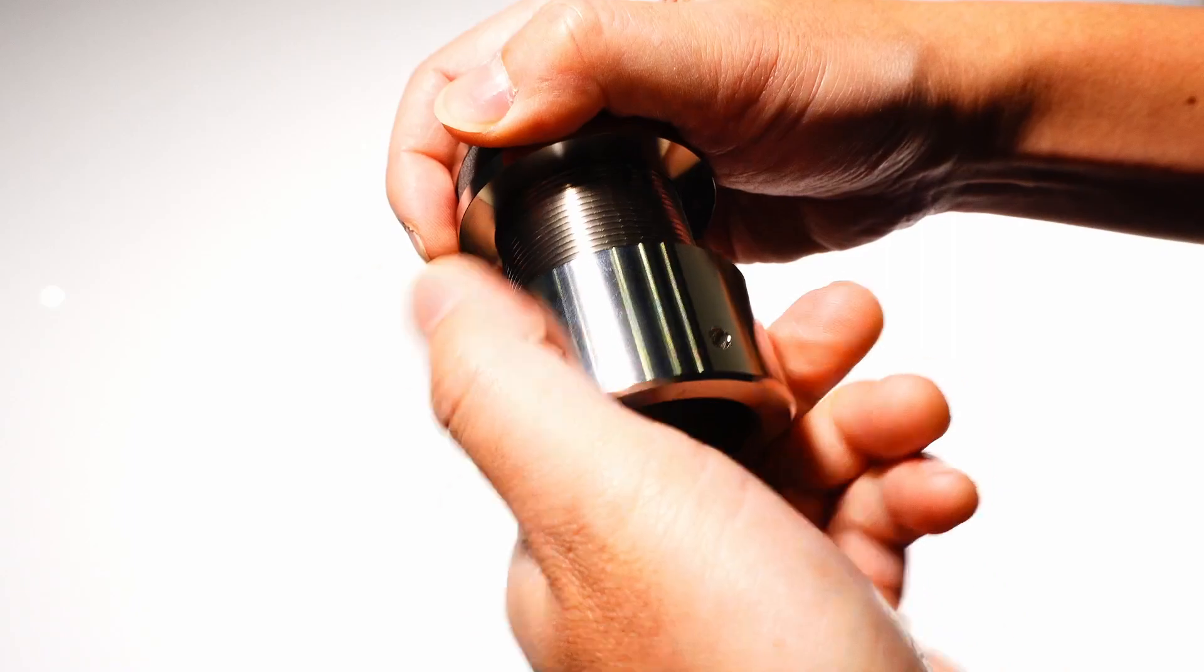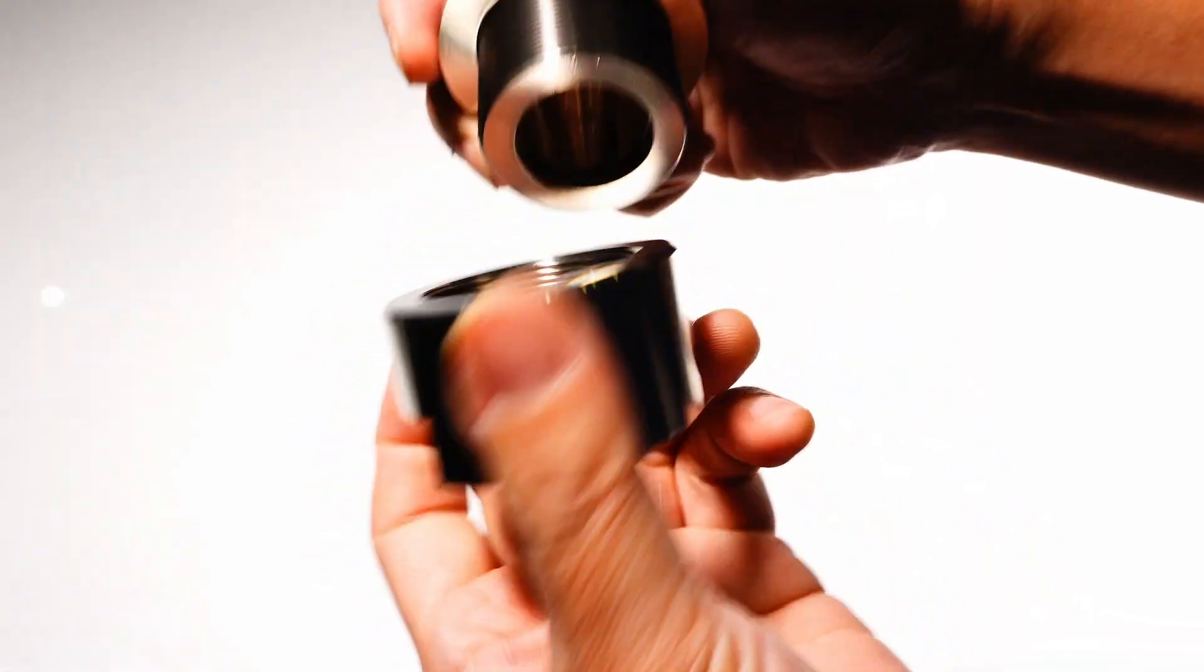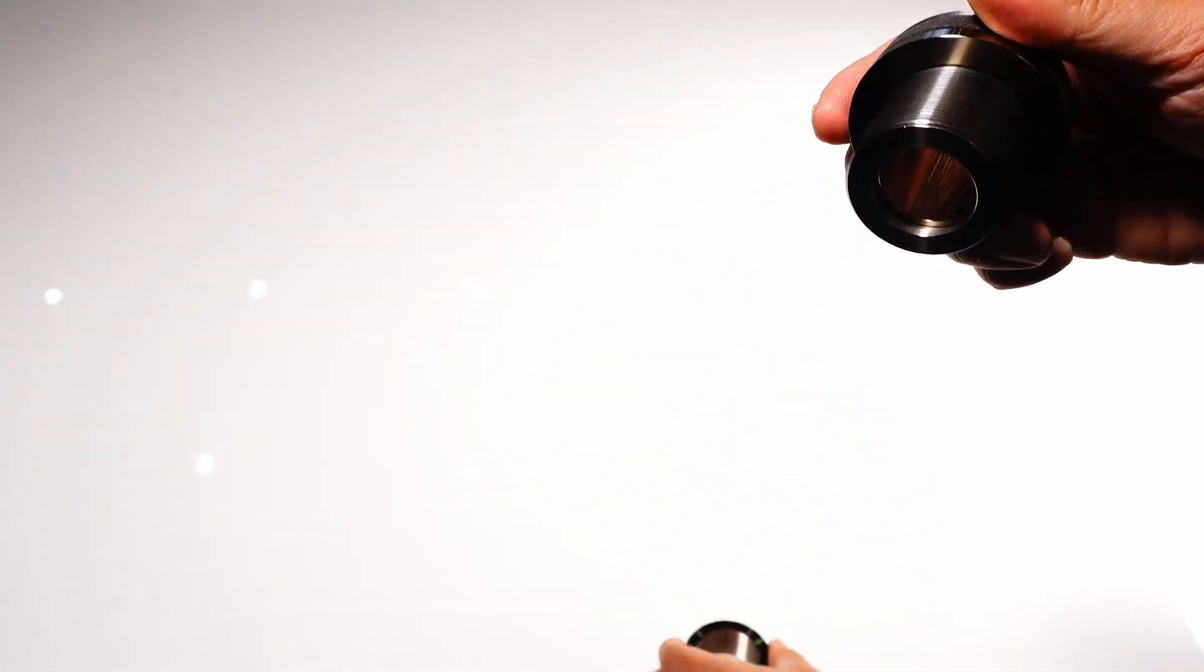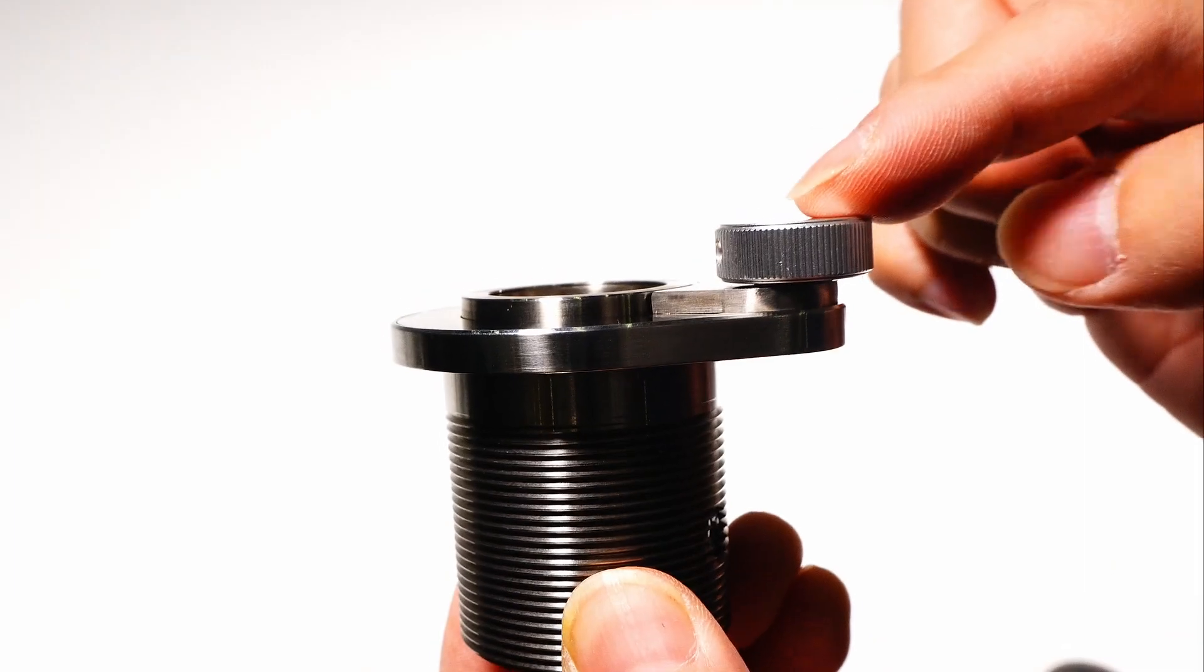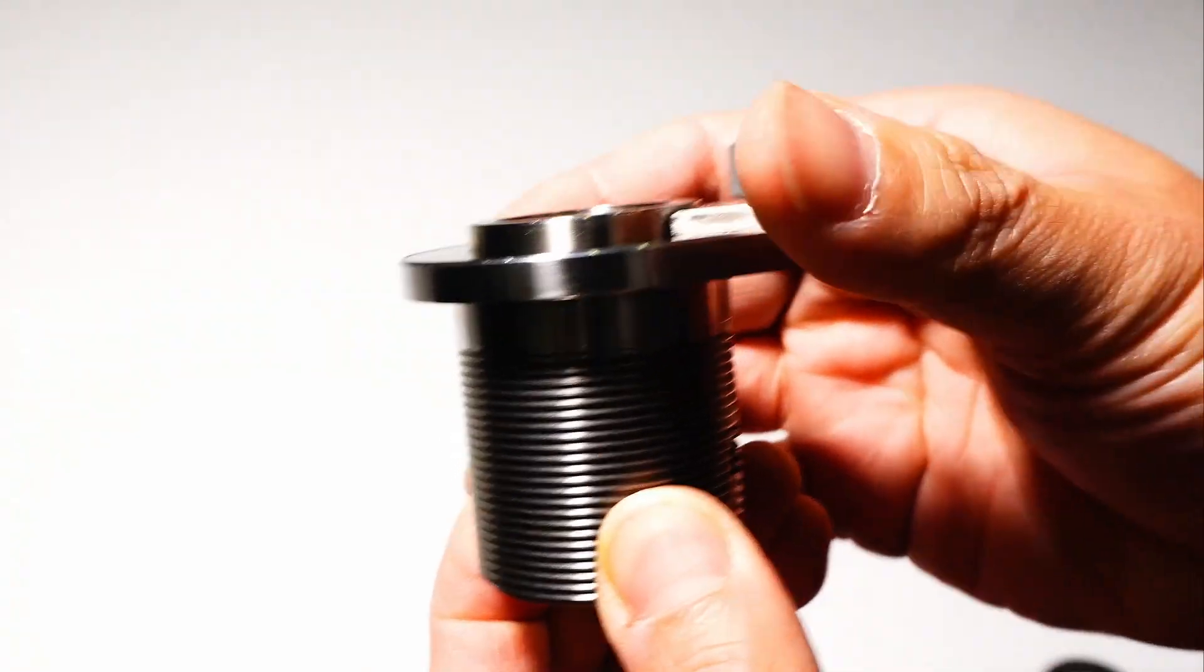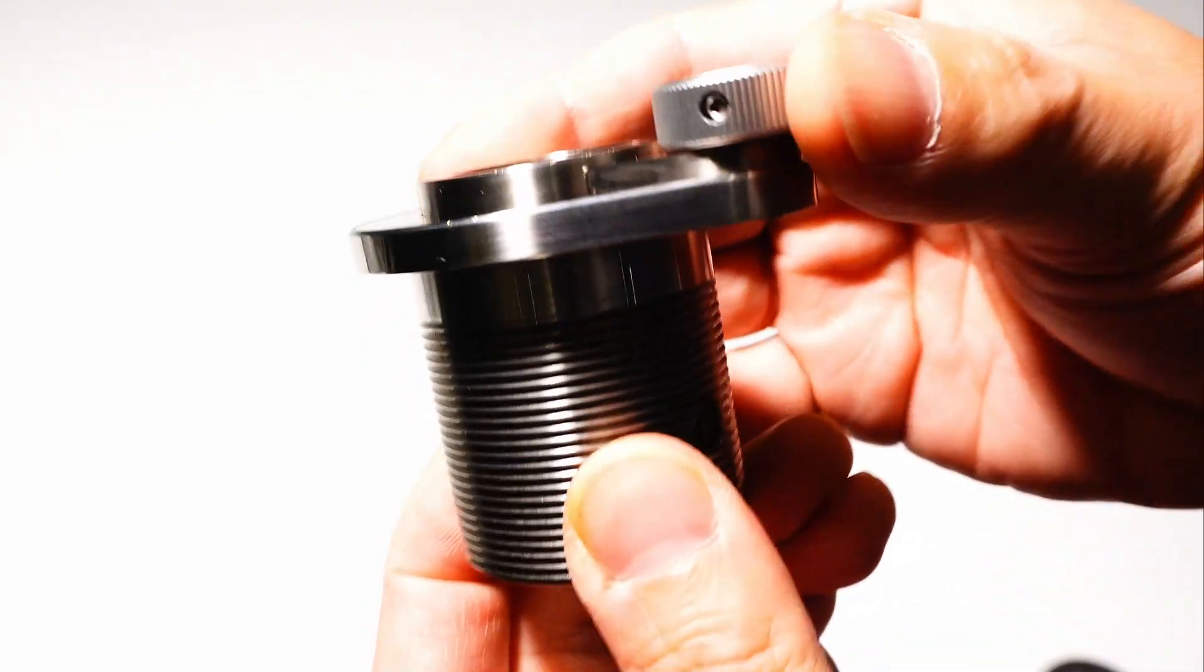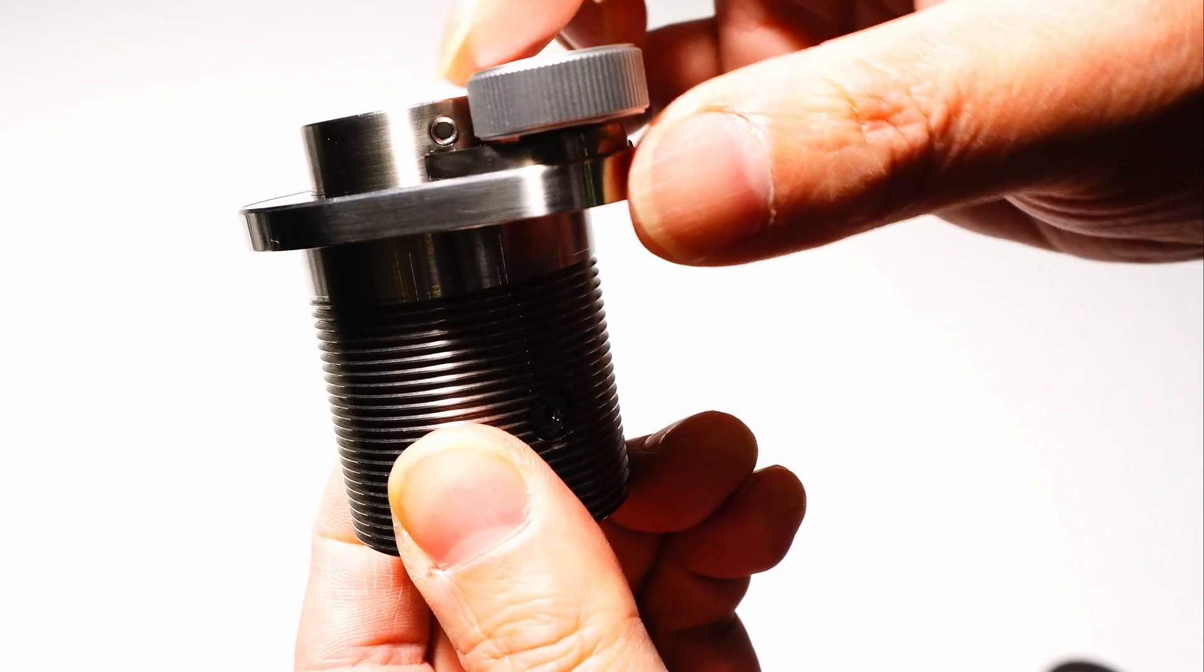The first step of installation is to attach the VTA elevator to the tonearm. Loosen the nut and washer. On the side of the VTA elevator, there is a tonearm height adjustment screw. Turn it to show a small screw on the side.